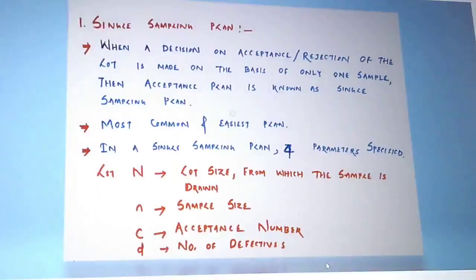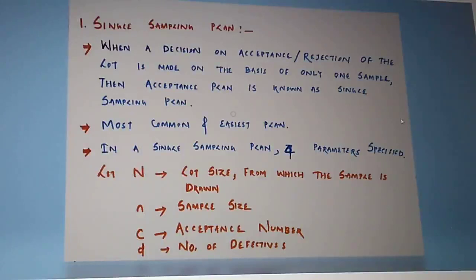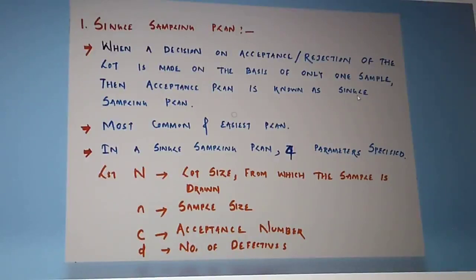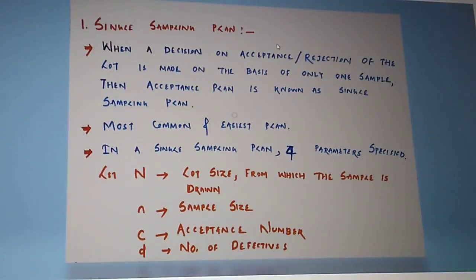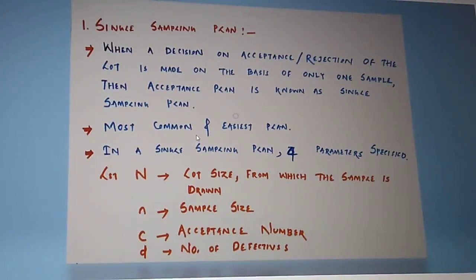Let us discuss in detail the single sampling plan — the first type. It is a very important type of sampling plan from your exam point of view. This sampling plan means when a decision on the acceptance or rejection of the lot is made on the basis of only one sample, it is known as a single sampling plan. It is the most common and easiest plan.